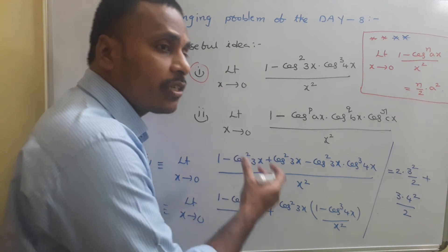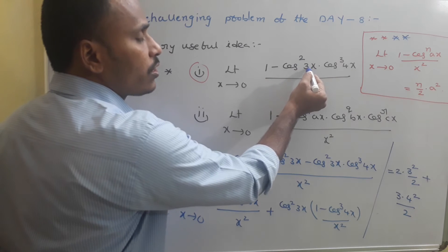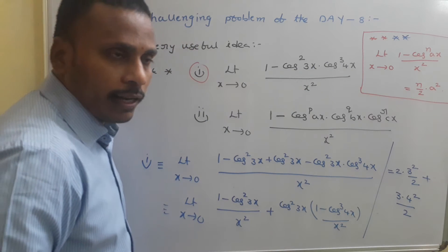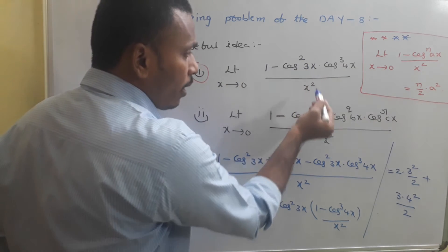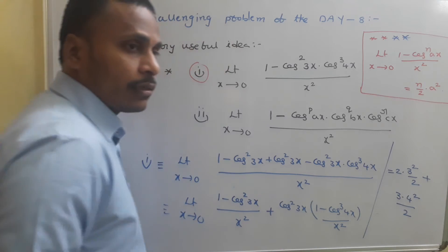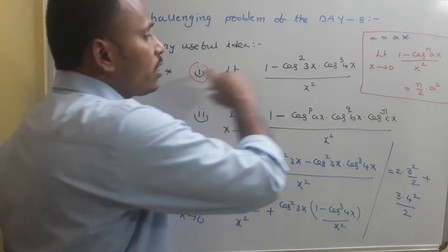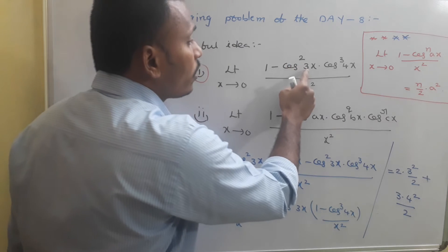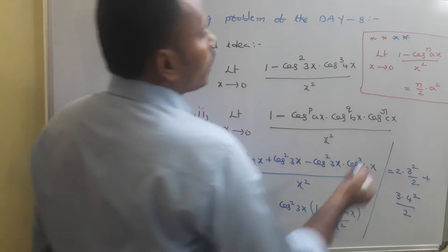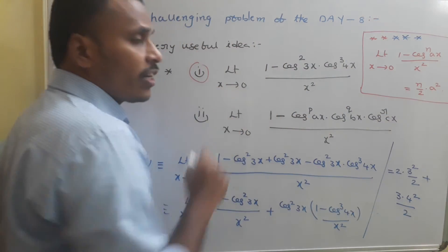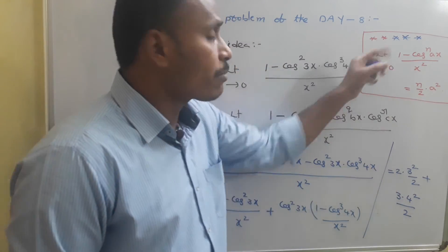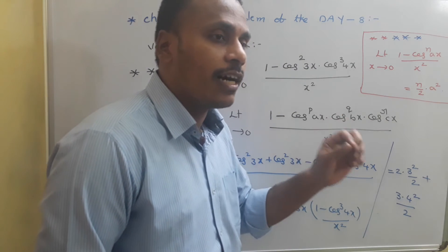The pattern is: the power times the coefficient of x squared, divided by 2. To repeat: power 2 into 3² by 2, plus power 3 into 4² by 2. This is the standard idea — limit as x tends to zero of (1 - cos^n(ax)) / x² = n·a²/2 — and I marked it as a 5-star formula because of how important it is.